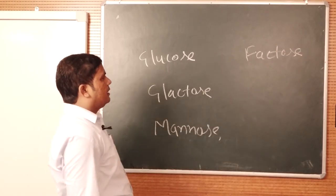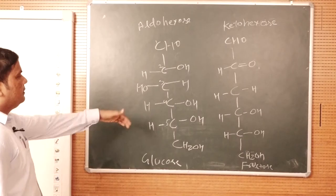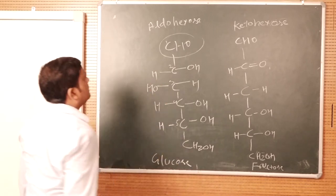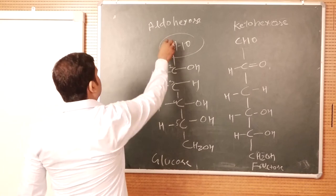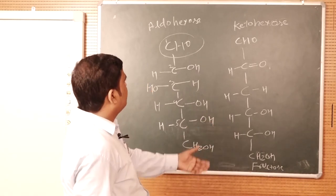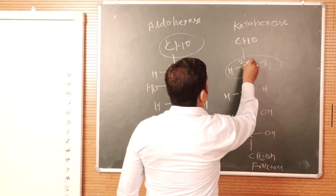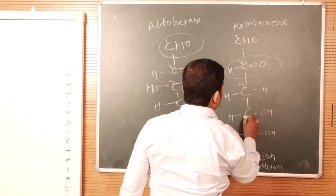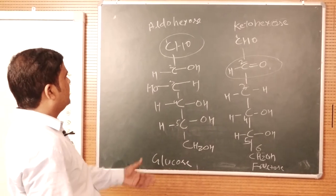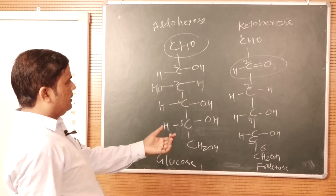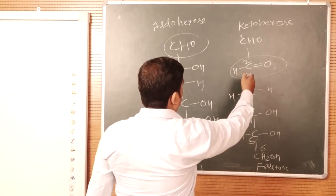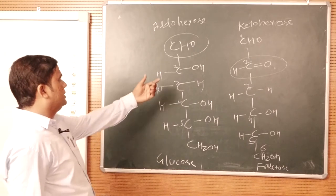Fructose is an example of a ketose sugar. The structure of glucose is also known as aldohexose. In this structure, the aldehyde group is present at carbon number 1. But in fructose, the ketose group is present at carbon number 2. In aldohexose, the oxygen is present at carbon number 1, represented as C=O-H.